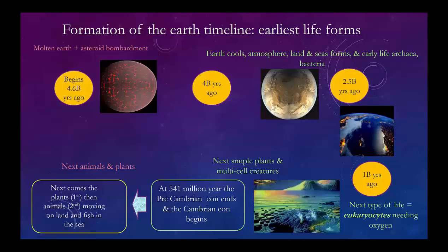Around 3 to 2.5 billion years ago, you start getting the very earliest life forms, which are called archaea and bacteria. Both still exist today — archaea are found in the ocean in hydrothermal vents, and bacteria are on land. Most bacteria are very helpful; for instance, we have them in our gut to digest food. The Earth continued to cool, the land and seas formed, but the land was all in one big blob that would later pull apart to make the continents.